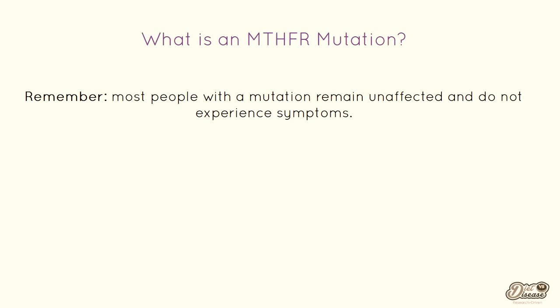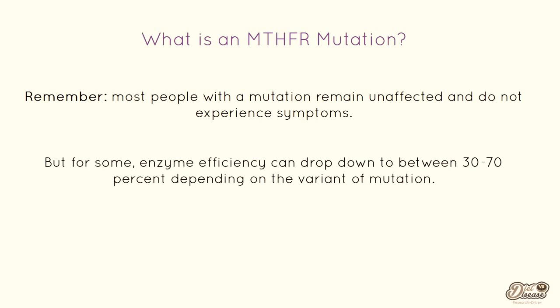Most people with a mutation actually remain unaffected and don't experience symptoms, but for some, enzyme efficiency can drop down to between 30–70% of normal, depending on the variant of the mutation. There are a lot of genetic mutations that can potentially hinder methylation, and MTHFR mutation is just one of many, but it's the most well researched and likely the most important. Those with an MTHFR mutation are at risk for poor conversion of folate and folic acid into their active form, which is known as 5-MTHF.